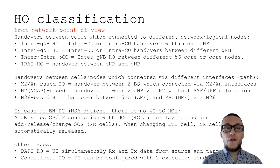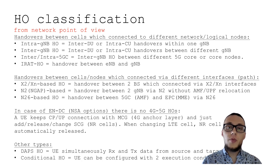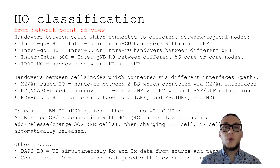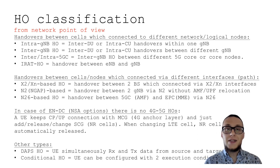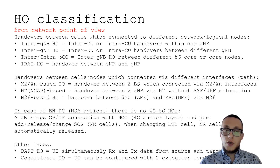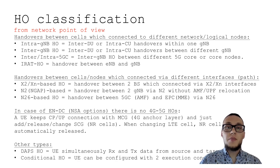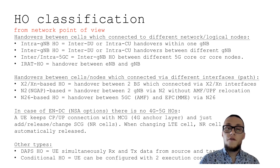Now let's classify handovers from a network point of view. We know that 5G has a base station called gNodeB. A gNodeB may consist of different nodes — distributed units and centralized units. It is possible to have handovers between these nodes, which we may call inter-DU or intra-CU handovers, depending on what kind of cells are connected to what kind of nodes in the 5G RAN network. It is also possible when a handover occurs between cells connected to different 5G core nodes — for example, to a different AMF or different UPF — in which case we may say it is an inter-5G core handover.